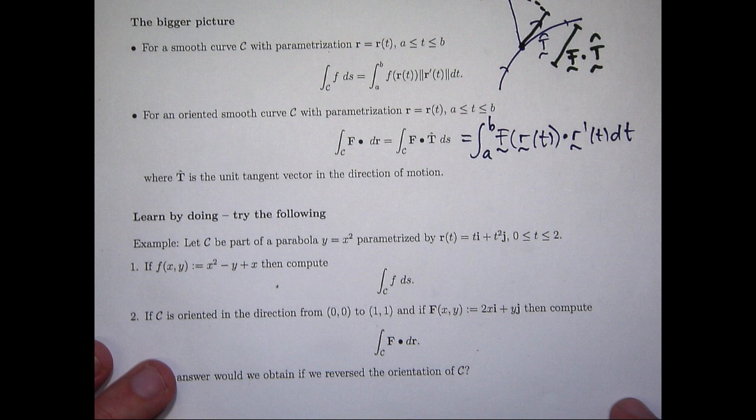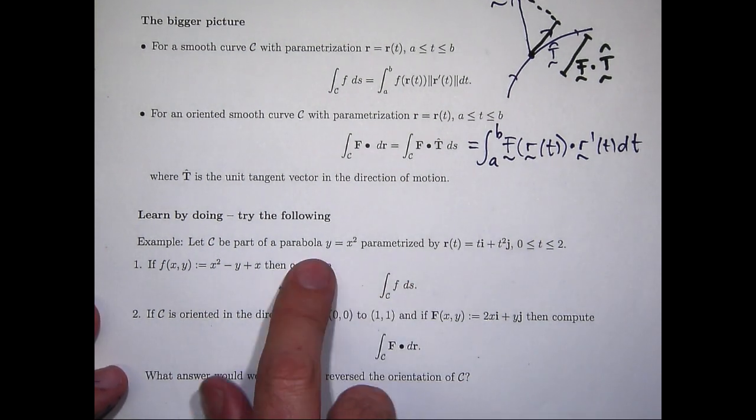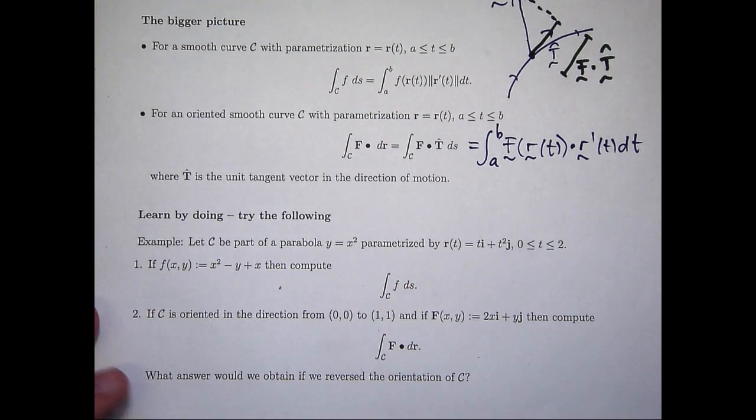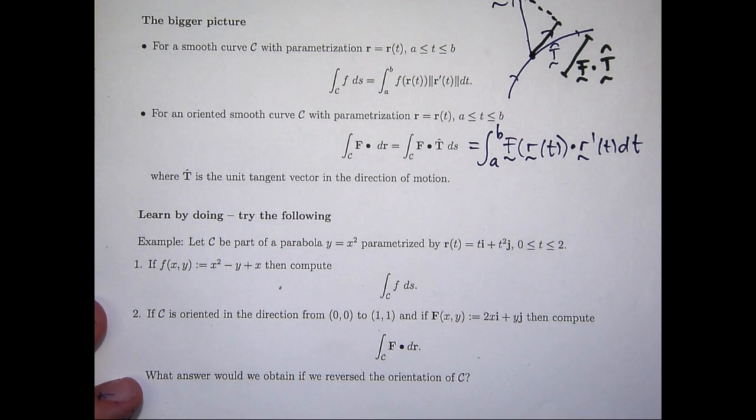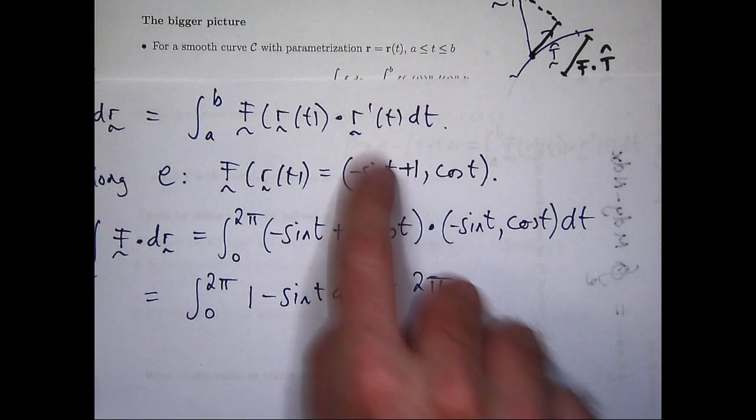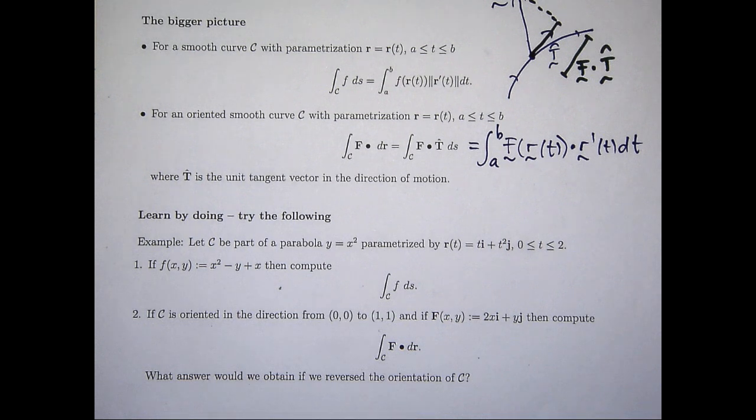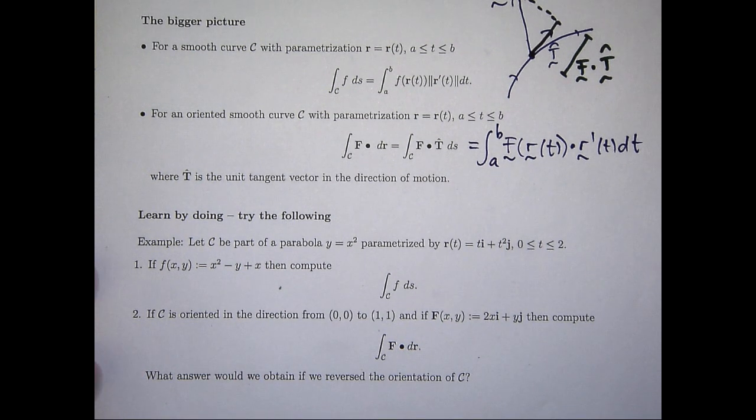Now, here are a couple of examples for you to try. They're very similar to the ones that I've just done. Now, you can see that sometimes I've used the i and j notation. Sometimes I've just used the ordered double notation like this. Both are acceptable, but have a go at these and see how you go.